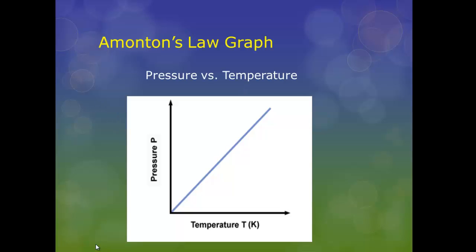Amonton's Law graph. You can see that it's a direct relationship. As your temperature increases along the x-axis, invariably, your pressure increases at the same rate. If we were looking at Charles' Law, it would be the same looking graph, except this y-axis would be in volume, because Charles' Law looks at temperature and volume.